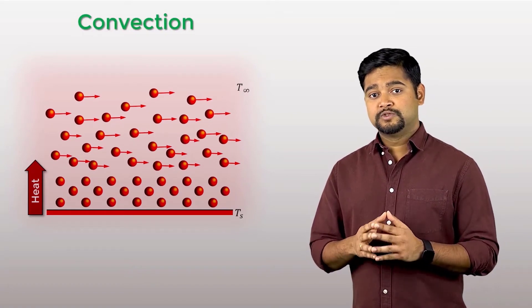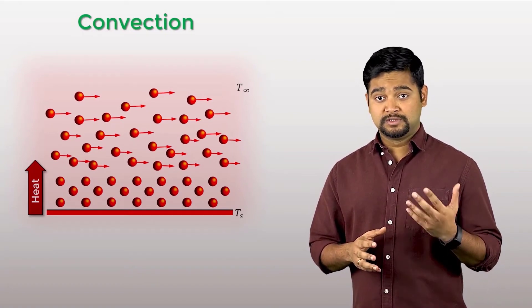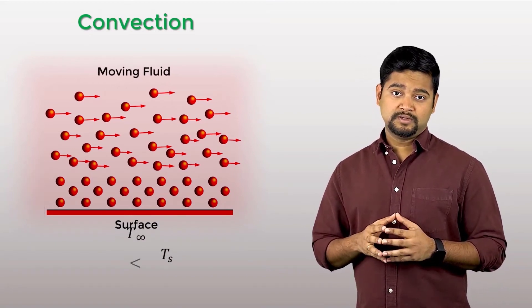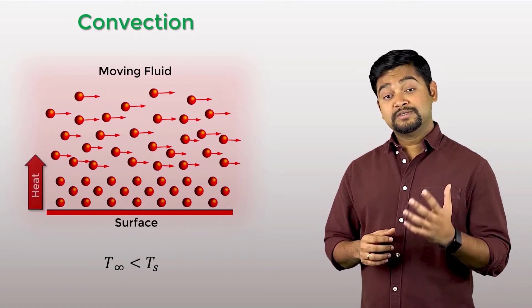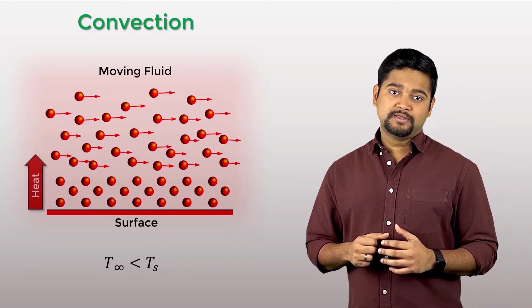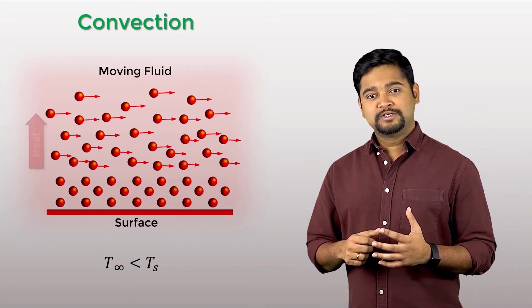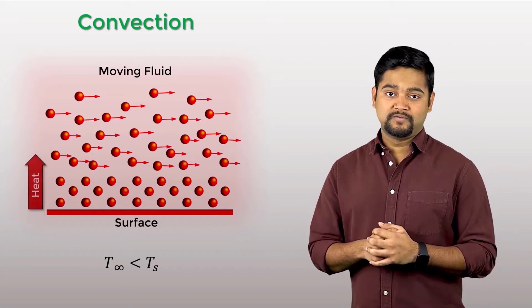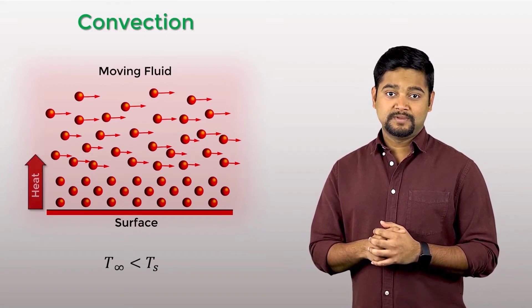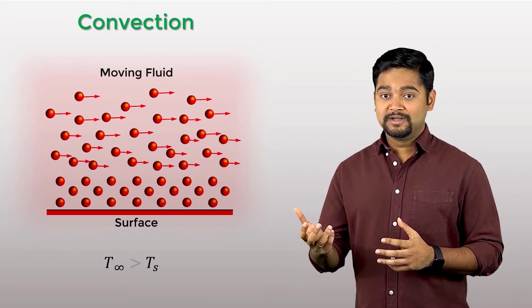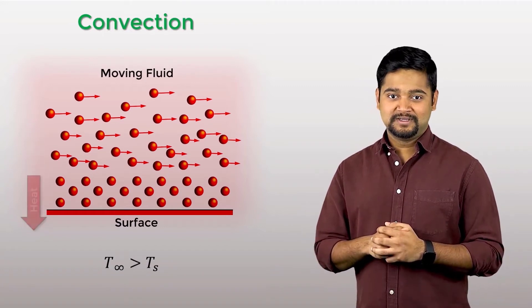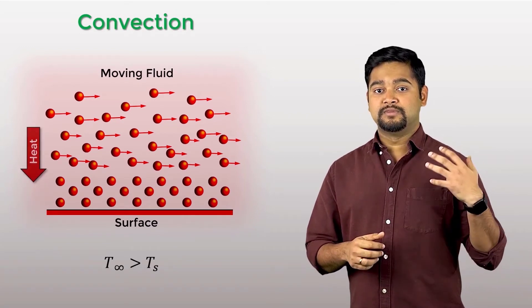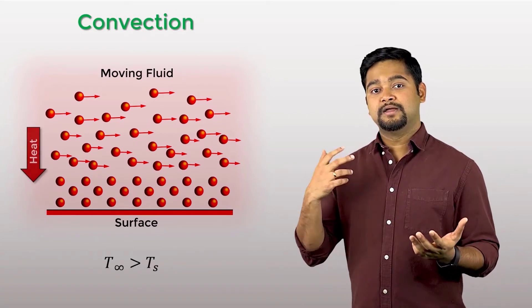Convection refers to heat transfer between a surface and a moving fluid when there is a temperature difference between the two. If the surface temperature is greater than the temperature of the fluid flow, convection heat transfer occurs from the surface and into the outer flow. If the temperature of the fluid is greater than the surface, then convection heat transfer occurs from the outer flow and into the surface.